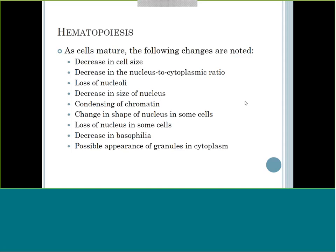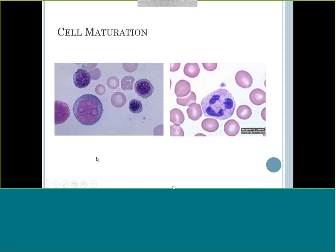Looking at this picture, the cell on the left with three nucleoli is an immature cell - it's a very large cell, the nucleus is quite large, it's basophilic with dark blue color, and it has three nucleoli. The cell on the right picture is a mature cell - it has a lighter, pinky-colored cytoplasm, the nucleus changed shape, and it has condensed chromatin with a very dark pattern inside the nucleus. That is an example of all the changes that take place in a cell as it matures.